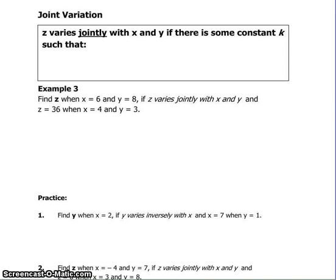Joint variation. Joint variation is going to throw in an extra variable. Z varies jointly with X and Y if there is some constant K such that Z equals K times X times Y.